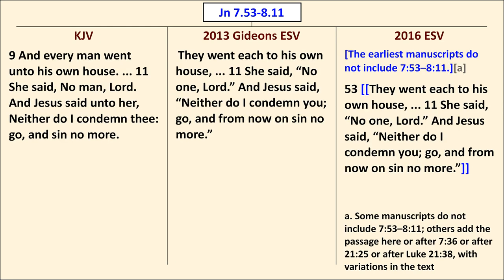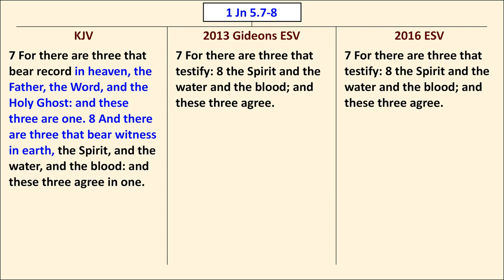Next of the Big Three is the Pericope Adultery, or the story of the woman taken in adultery. The 2016 ESV excludes it by putting it in double bars and including a note saying it's probably not original. The King James Version includes it, and the Gideon's ESV agrees with the King James Version. Finally, the Three Witnesses passage in 1 John 5:7-8 — here the Gideon's ESV reads identically to the 2016 ESV, so for some reason the Gideons decided to leave out the Three Witnesses passage.